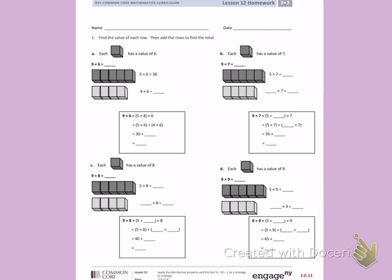Number 1, find the value of each row, then add the rows to find the total. Letter A, each cube has a value of 6, so I need to use those cubes to help me find 9 times 6.